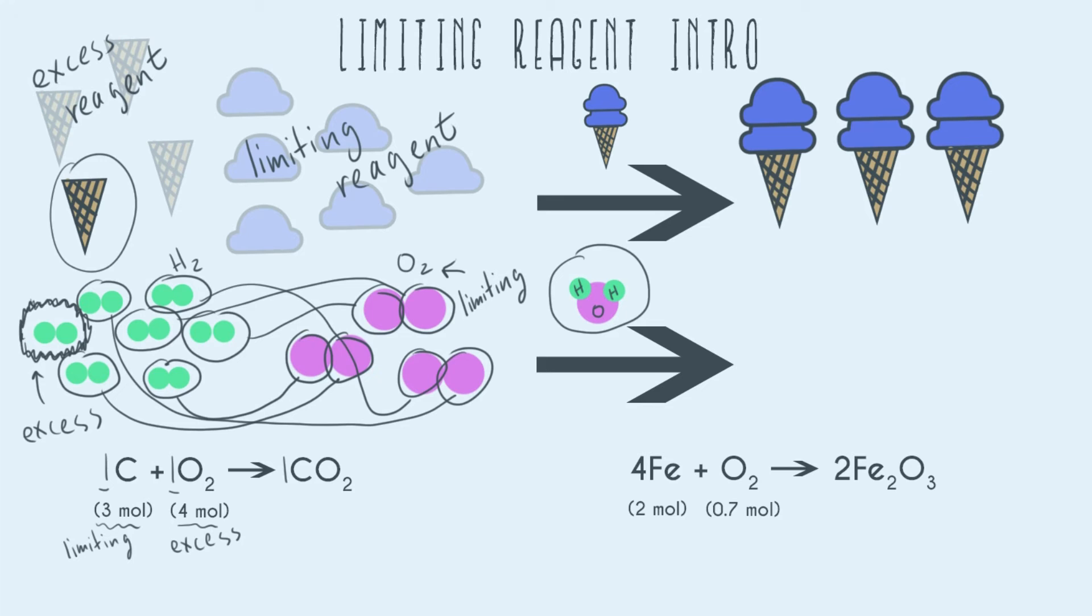And so the next thing we have to keep in mind is that our ratio usually isn't going to be one to one. So we can't just look at three moles and four moles and say, oh, okay, the one that runs out first is the one with the least number of moles. Because as you saw in the ice cream cone example, and the example with water, those aren't one to one.